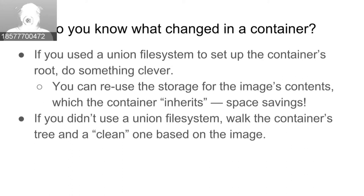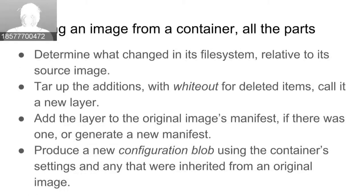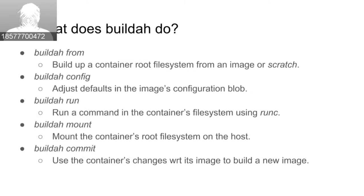If you're using a union filesystem — something that lets you efficiently compute differences between layers — you can extract just the changes for that layer. The whiteout format closely matches the format used by AUFS. If you're not using a union filesystem, you basically walk the filesystem tree and do the equivalent of a recursive diff, which can be very time-consuming. Once that's done, you create a new layer, update the manifest, generate a new configuration blob, and the result is a brand new image.